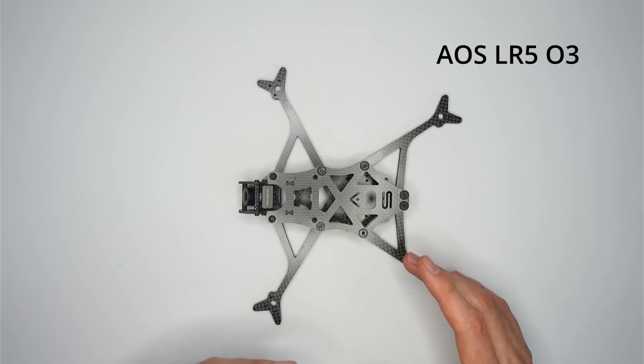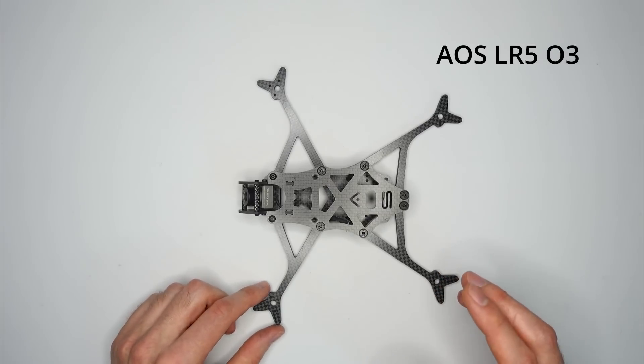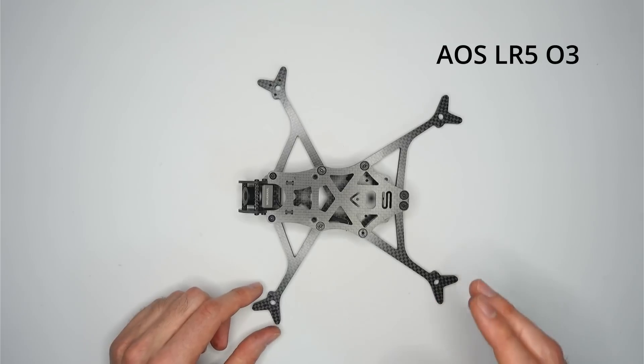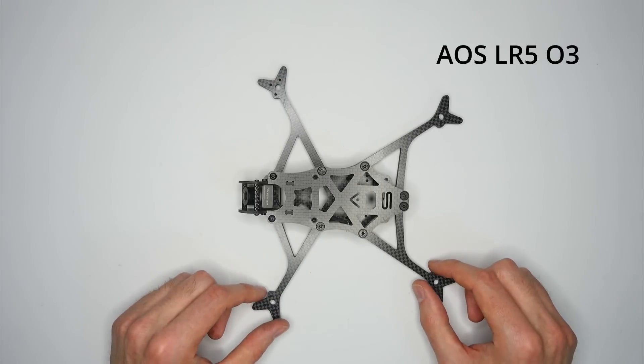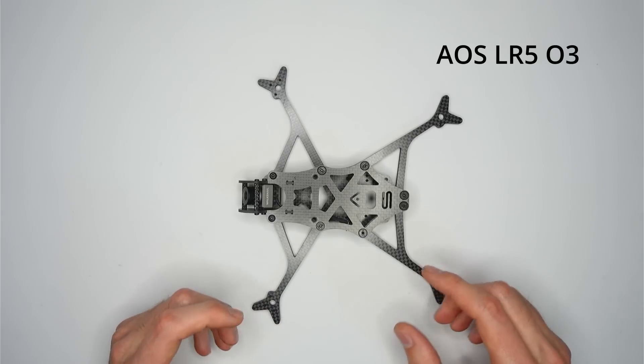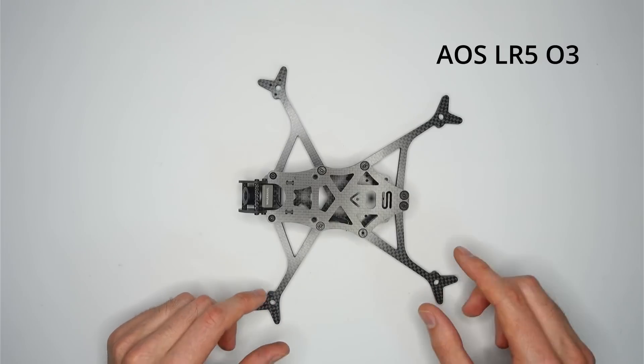And I think this type of platform is where the O3 system might really make sense. I mean, the extra latency is not going to be too much of a problem for flying long range, because you're not typically flying very fast in close proximity to objects, you're more cruising. And not having to carry that extra weight of the GoPro is going to really extend the flight time and improve the flight performance of a quad like this as well.